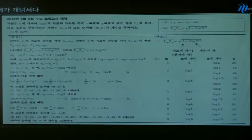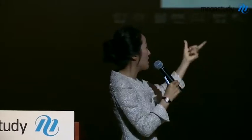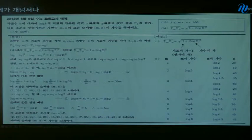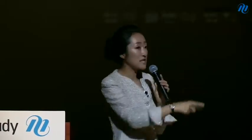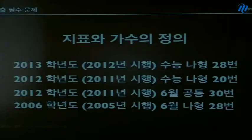지표·가수 30번 문제. 지표 가수가 나오면 주제는 하나야. '너 지표 알아? 너 가수 알아?' 이거라고. 근데 왼쪽처럼 방정식으로 접근해서 푼 학생들도, 해설지들도 그렇게 했더라고. 지표가 뭔지 가수가 뭔지 그게 주제면 오른쪽처럼 식을 딱 보고 지표는 아, 가수는 아 하고 표 비교해서 풀어내는 문제야. A형에서는 늘 어려운 문제로 나오니까 유사 문제 반드시 풀어보세요.